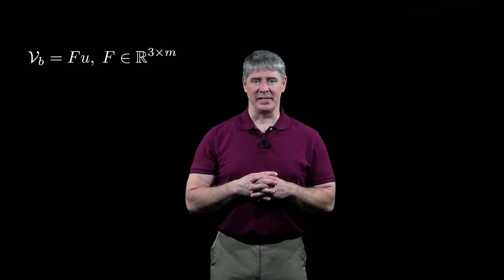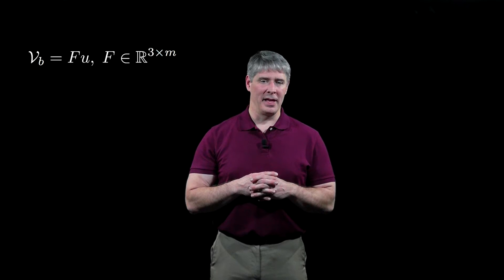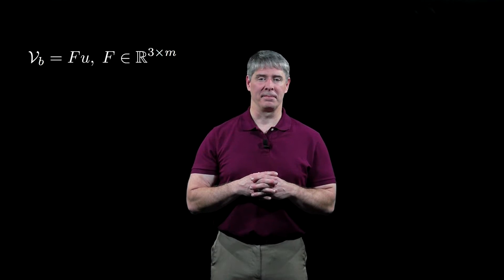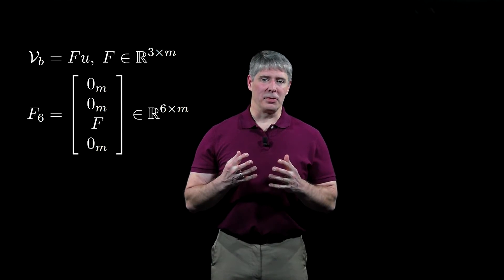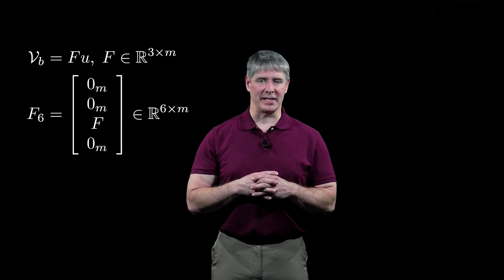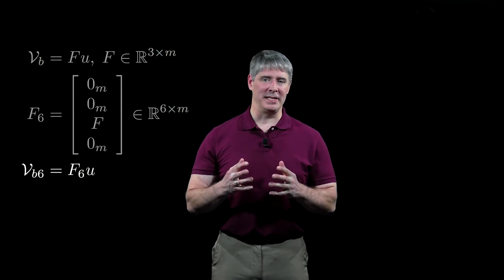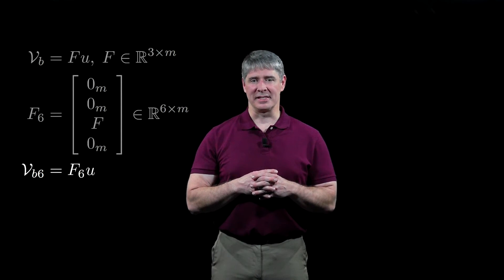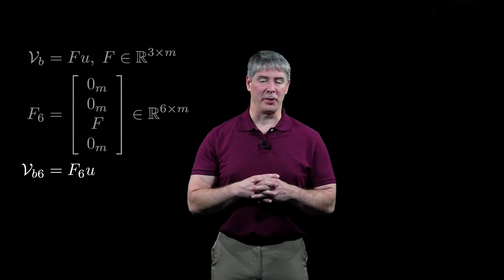To derive Jbase, we write the planar twist of the chassis expressed in the chassis frame as VB = Fu, where F is the 3 by m transformation discussed in earlier videos. By adding rows of zeros above and below, we create the 6 by m matrix F6 satisfying VB6 = F6u, where VB6 is the 6-dimensional chassis twist expressed in the chassis frame.